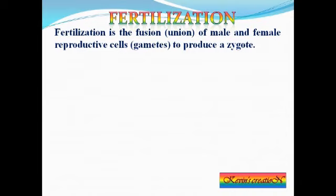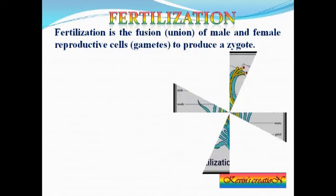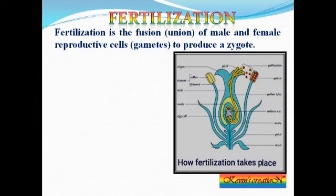Then comes fertilization. The definition of fertilization is the fusion or union of male and female reproductive cells or gametes to produce a zygote. Fertilization is the process in which male and female gametes combine and fuse together to produce a zygote.